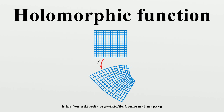If continuity is not given, the converse is not necessarily true. A simple converse is that if U and V have continuous first partial derivatives and satisfy the Cauchy-Riemann equations, then f is holomorphic. A more satisfying converse, which is much harder to prove, is the Looman-Menchoff theorem: if f is continuous, U and V have first partial derivatives, and they satisfy the Cauchy-Riemann equations, then f is holomorphic.